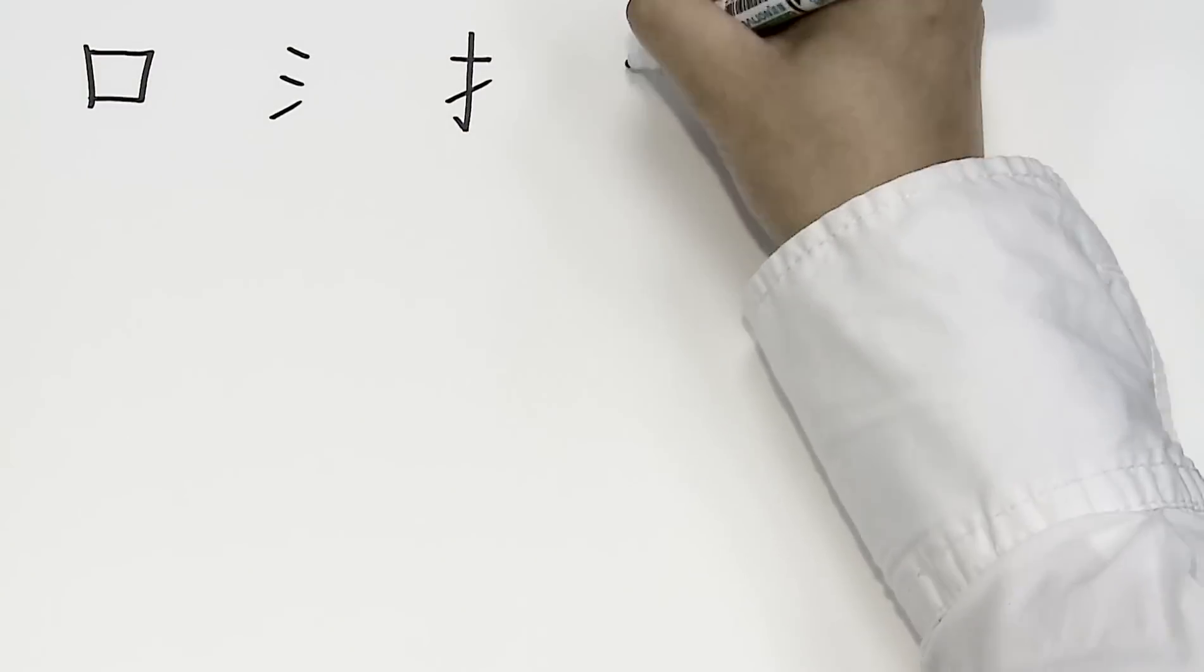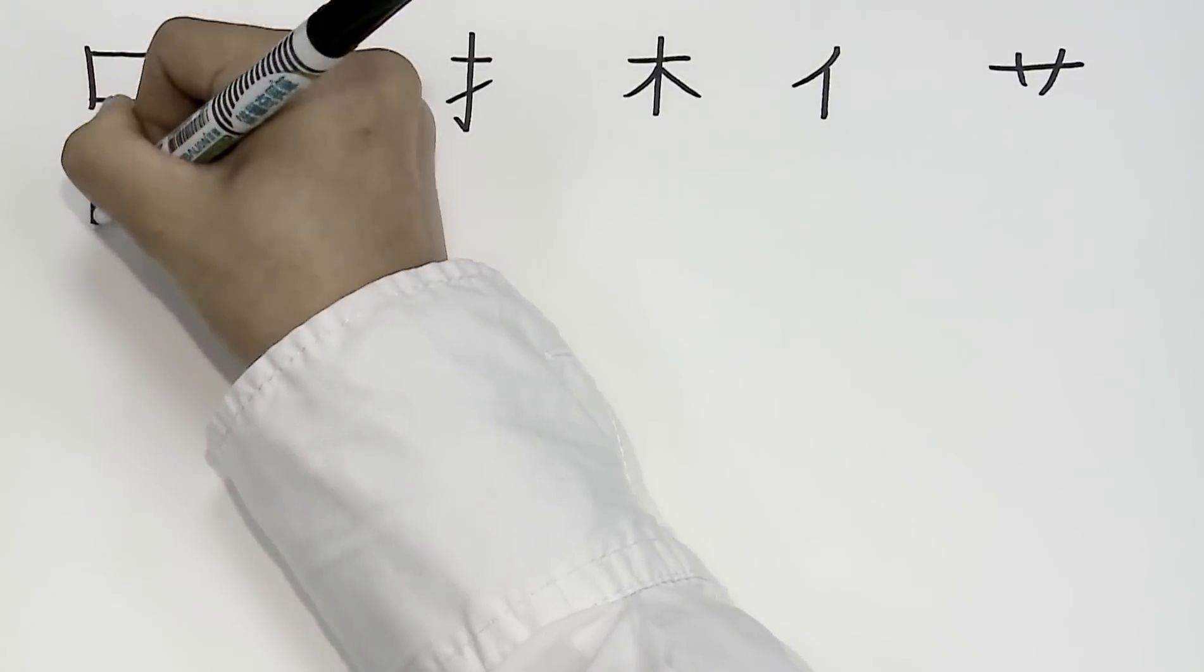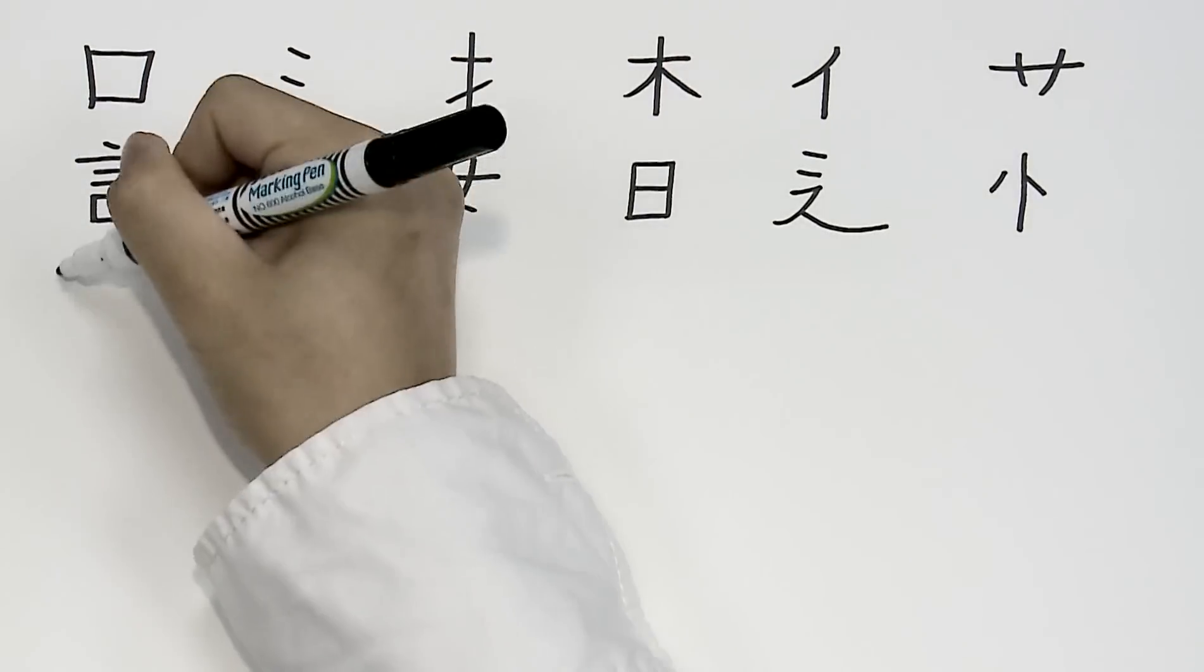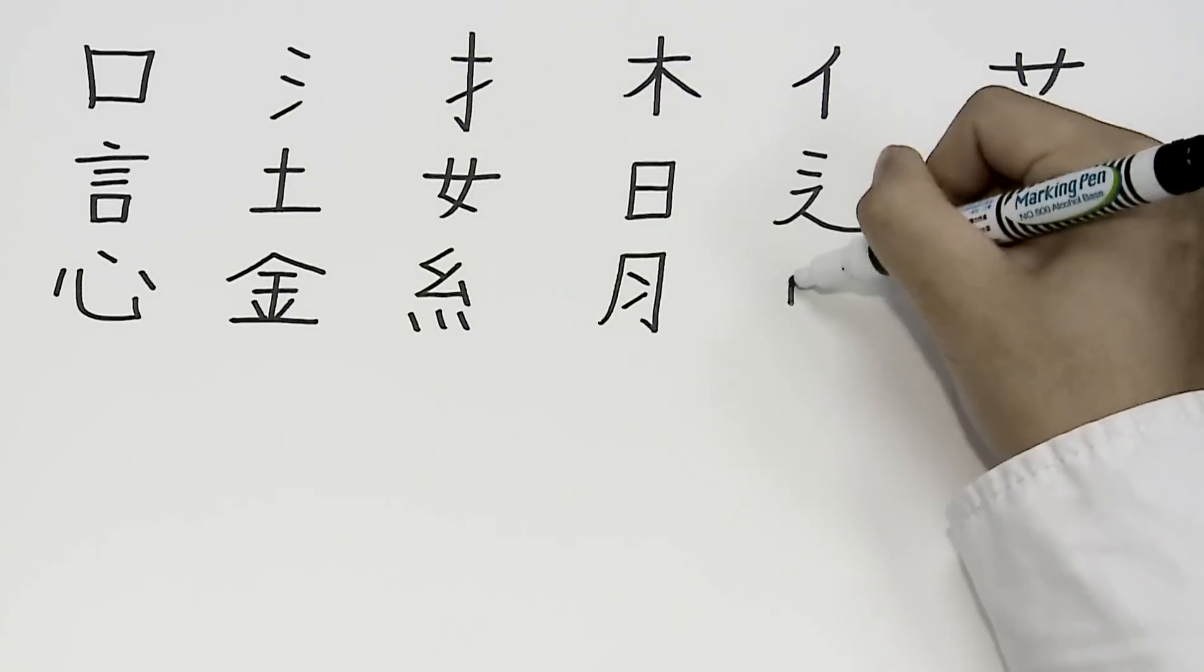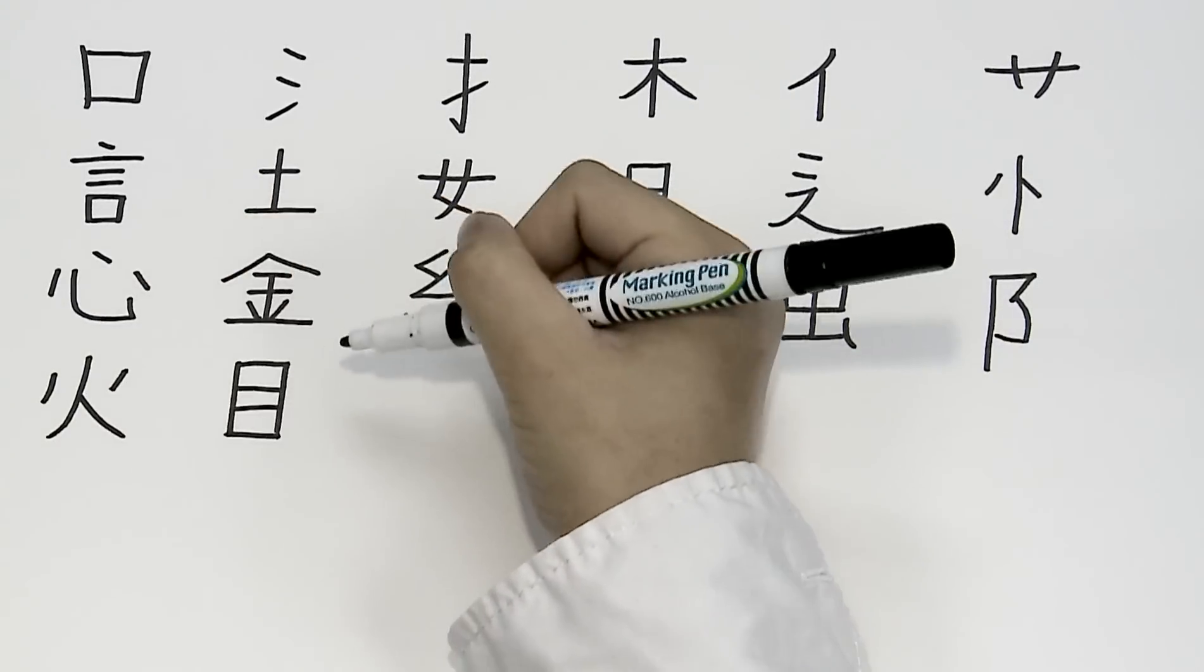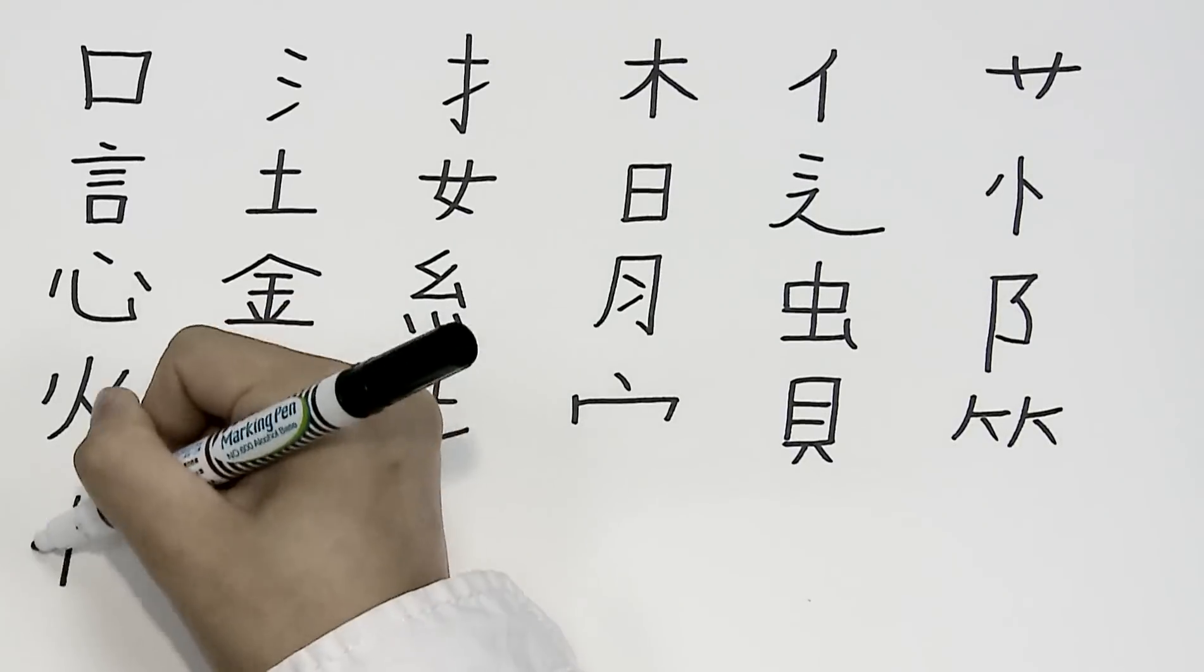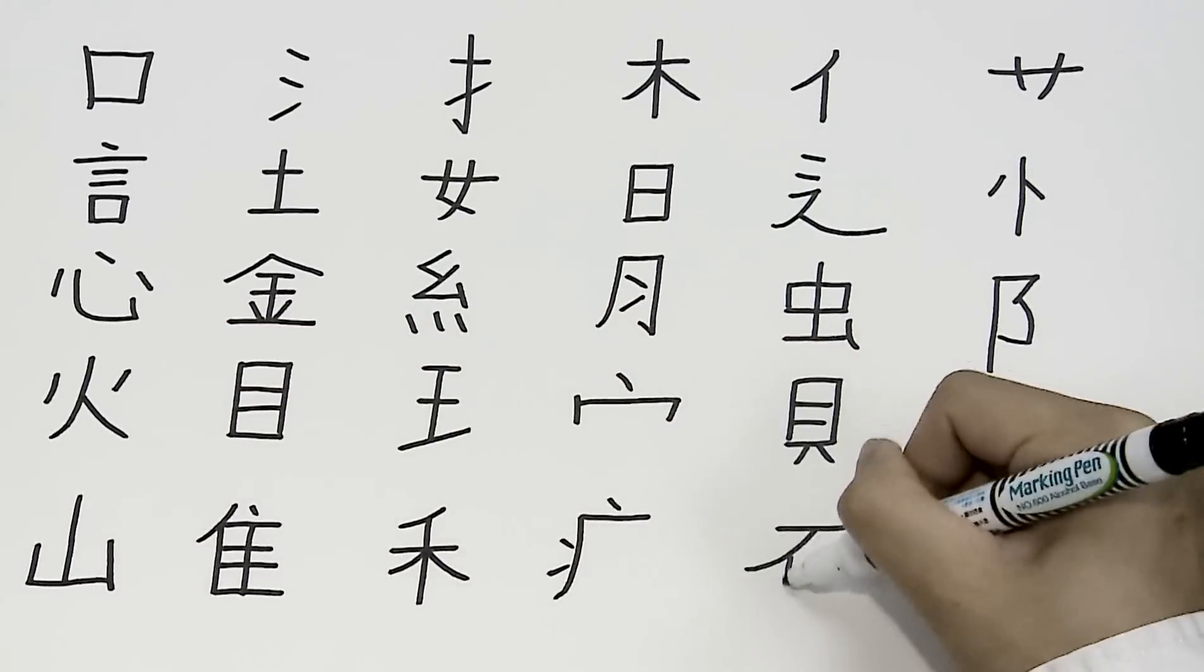Mouth or opening, water, hand, tree, person, plant, speaking or words, land, woman, sun, movement, heart, gold or metal, silk, meat, insect, city or hill, fire, eye, jade, covering, money, bamboo, mountain, bird, wheat or grain, sick, stone, knife.